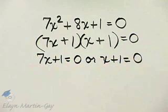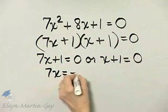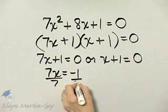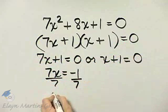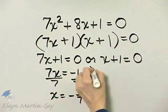Or x plus 1 is equal to 0. Here we'll subtract 1 from both sides. So we'll have 7x is negative 1. We will divide both sides by 7 and we'll have that x is negative 1 seventh.